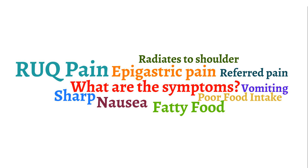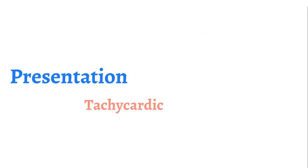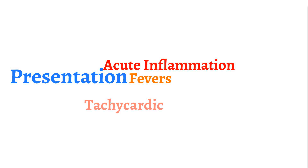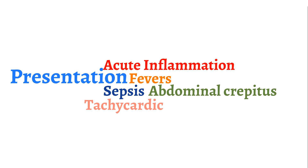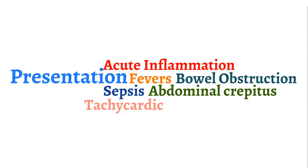When patients present to the hospital, they are generally tachycardic because of underlying pain, and may even have fevers because of acute inflammation. It is important to identify signs of sepsis, abdominal crepitus, and bowel obstruction to identify severe forms of cholecystitis such as emphysematous or gangrenous cholecystitis.